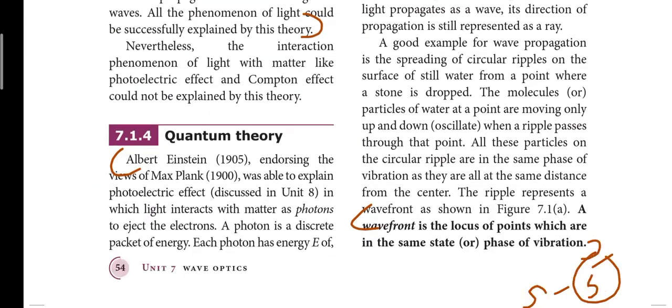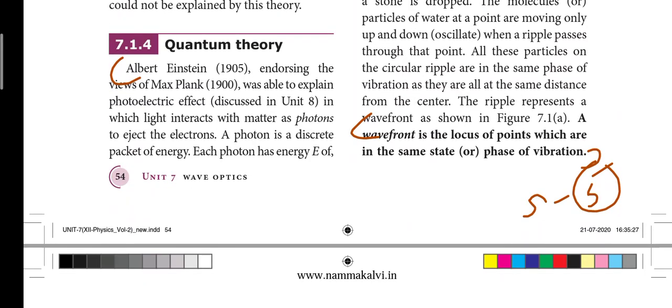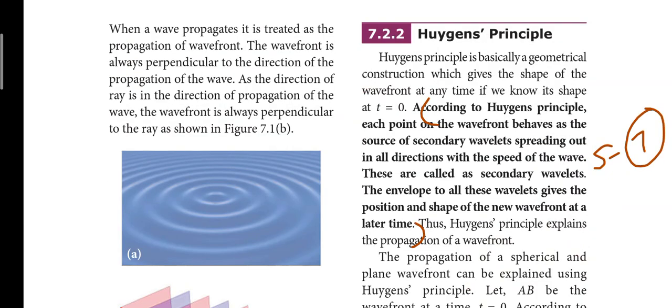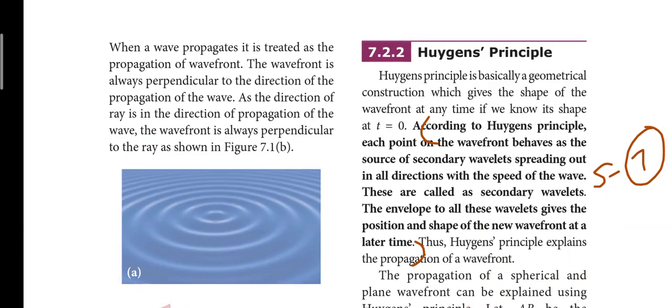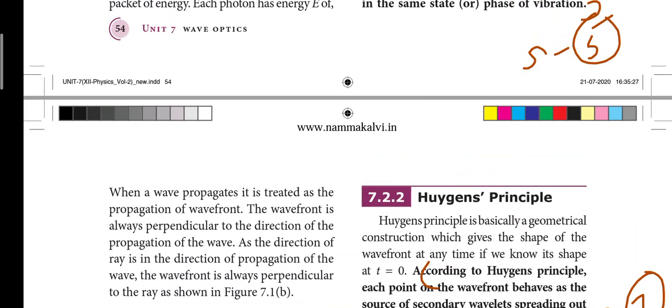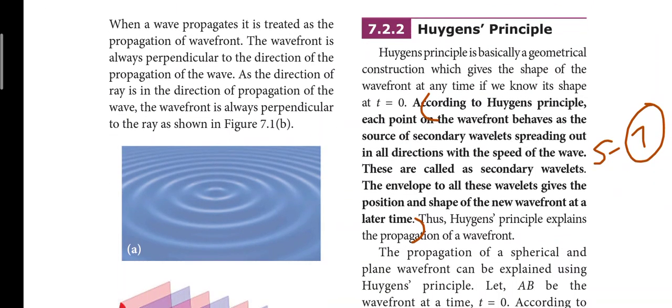Next page. Last right side key: wavefront is the locus of points which are in the same state or phase of vibration. That is the fifth short answer. Next page, that is page number 55: Huygens' principle. According to Huygens' principle, there are black color bold letters. That is the seventh short answer.